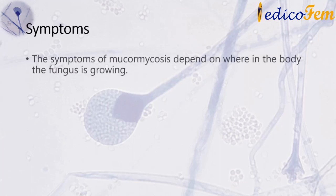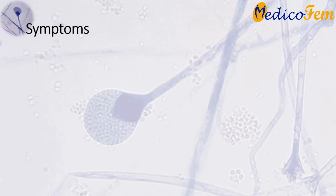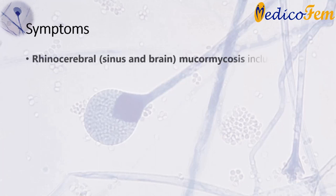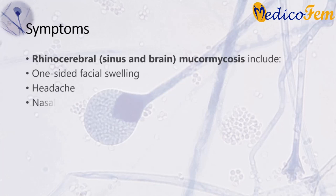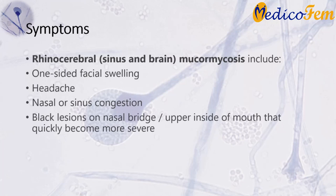Symptoms of rhinocerebral sinus and brain mucormycosis include one-sided facial swelling, headache, nasal or sinus congestion, and black lesions on the nasal bridge or upper side of the mouth that quickly become more severe, as well as fever.